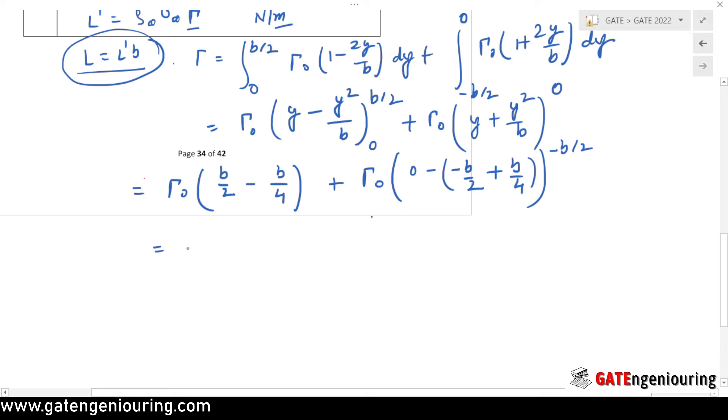When we simplify this, I get b/2 minus b/4 is b/4. And here also, if you see, 0 minus minus minus b/2 becomes plus b/2, and this becomes minus minus b/4, so this is also equal to b/4.